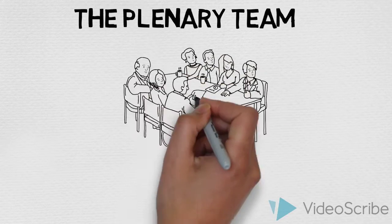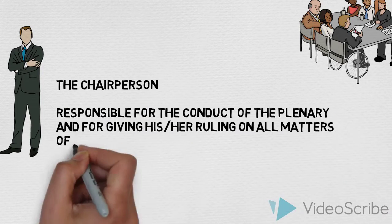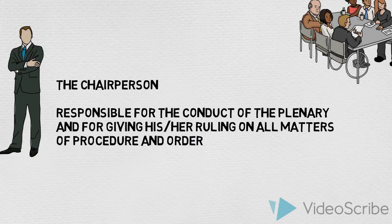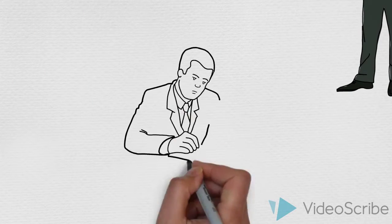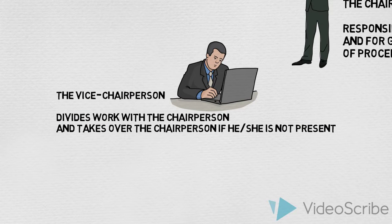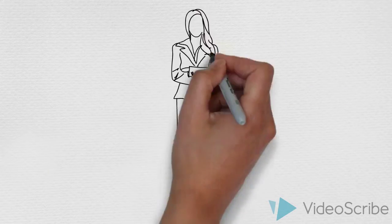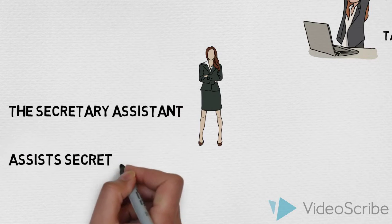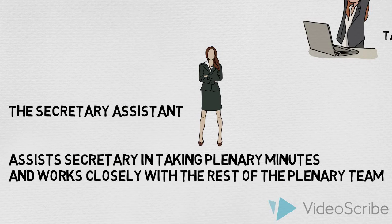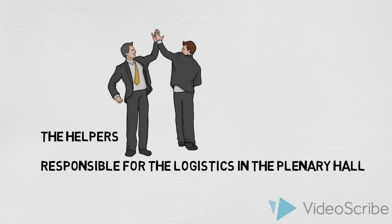The plenary team. The chairperson is responsible for the conduct of the plenary and for giving his or her ruling on all matters of procedure and order. The vice chairperson divides work with the chairperson and takes over if he or she is not present. The secretary takes plenary minutes. The secretary assistant assists the secretary in taking plenary minutes and works closely with the rest of the plenary team. The helpers are responsible for the logistics in the plenary hall.